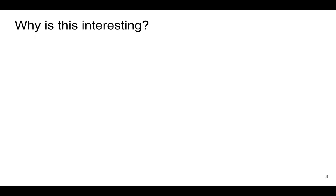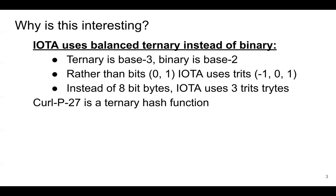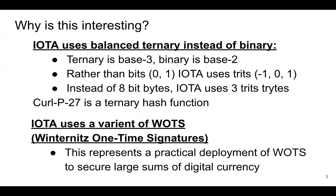So why is this interesting to look at? IOTA uses balanced ternary instead of binary — ternary is base 3, binary is base 2 — so rather than bits 0 and 1, IOTA uses trits: minus 1, 0, and 1. Instead of 8-bit bytes, IOTA uses 3-trit trytes. The hash function that IOTA uses, curlP27, is a ternary hash function. IOTA also uses a variant of Winternitz one-time signatures for their signature scheme.